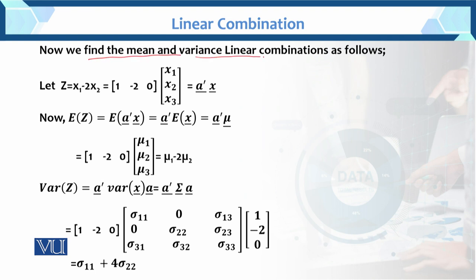We need to find the mean and variance of the linear combinations. For the first part, z = x1 minus 2x2. The constant vector a associated with this is: coefficient of x1 is 1, coefficient of x2 is minus 2, and since x3 does not appear in this particular example, its coefficient is 0.